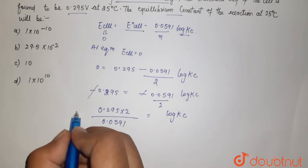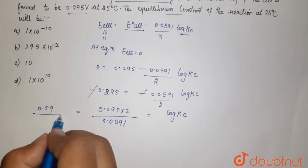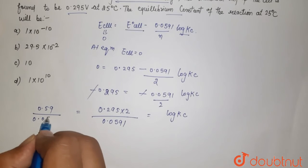Now here, if you multiply this, this will come out to be 0.59. It is 0.059.